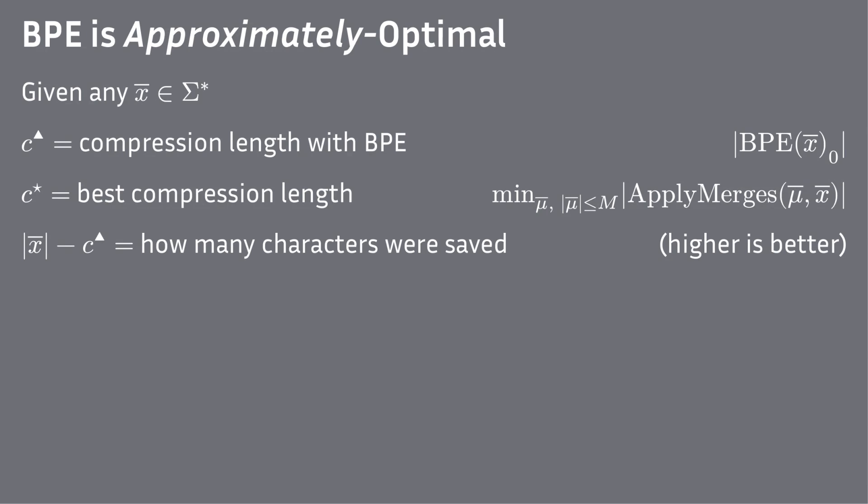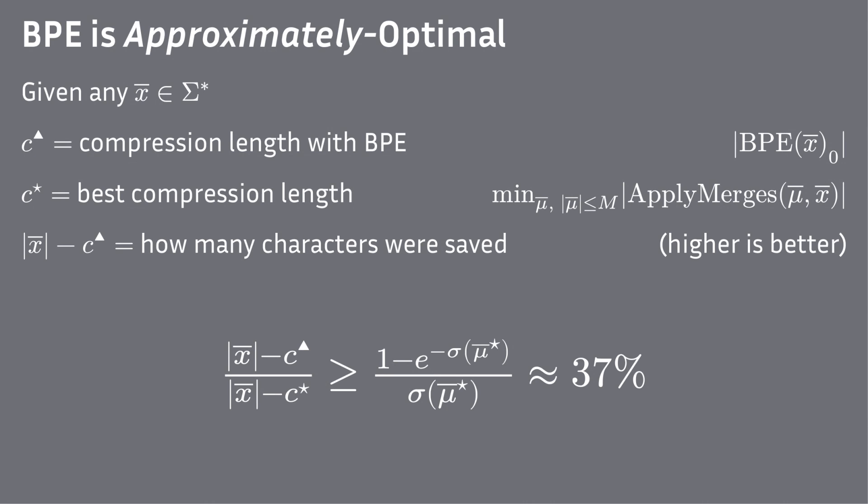However, we show that BPE is not arbitrarily suboptimal. If we compute how many characters we save with BPE as opposed to optimal BPE, we get a lower bound which is constant. This means that whatever adversarial sequence you give to BPE, it is going to be at least one third as good as the optimal one.